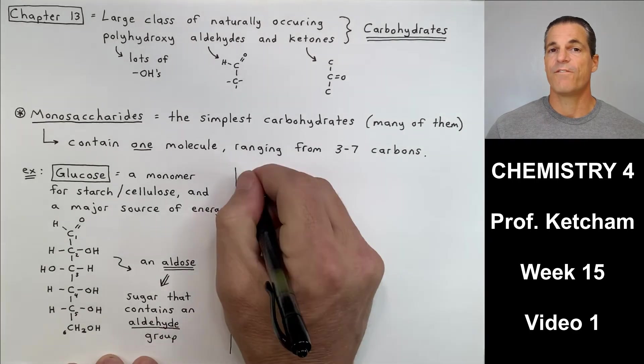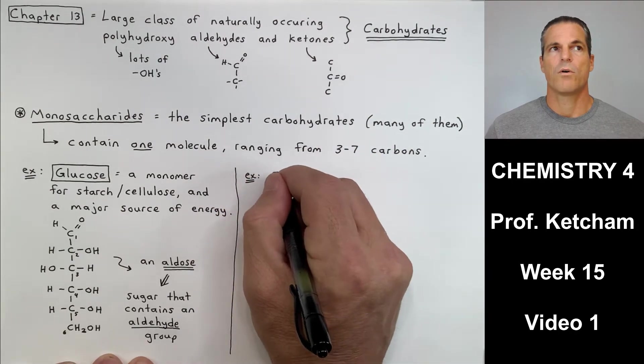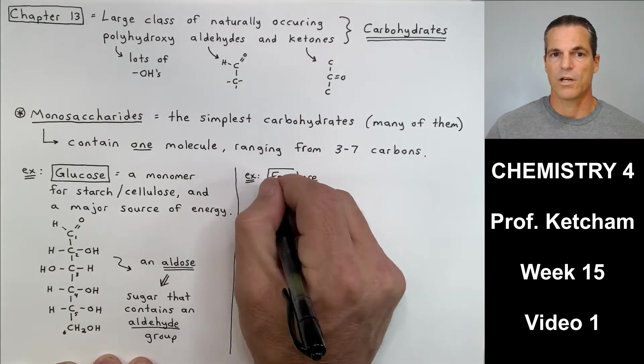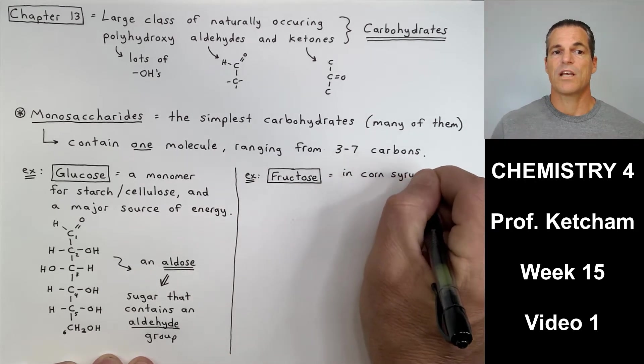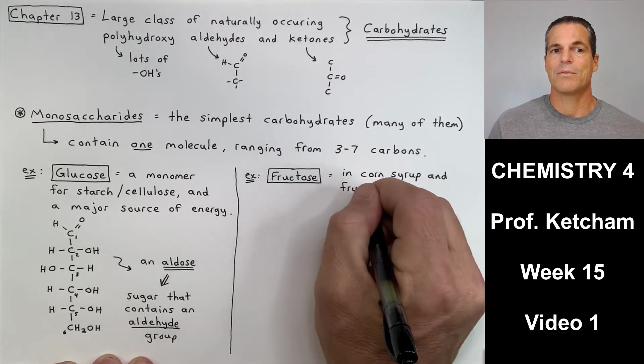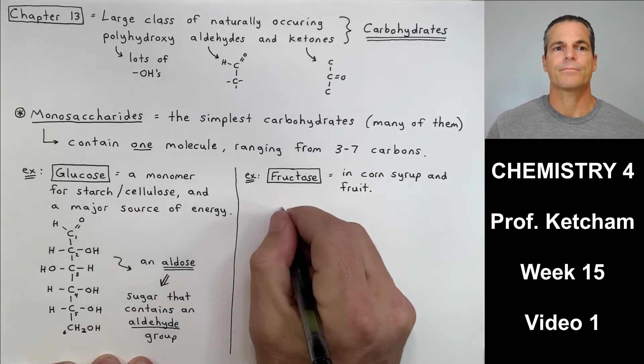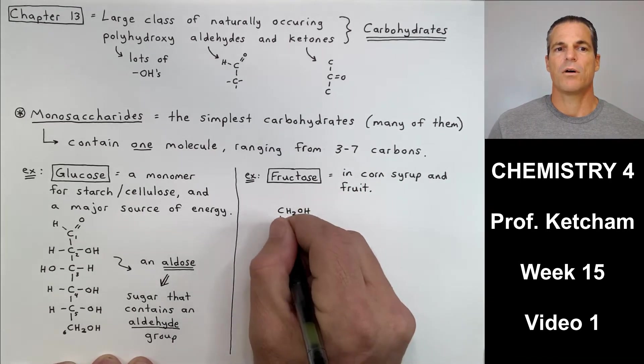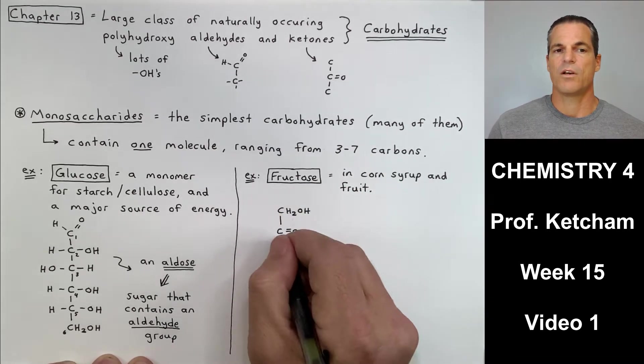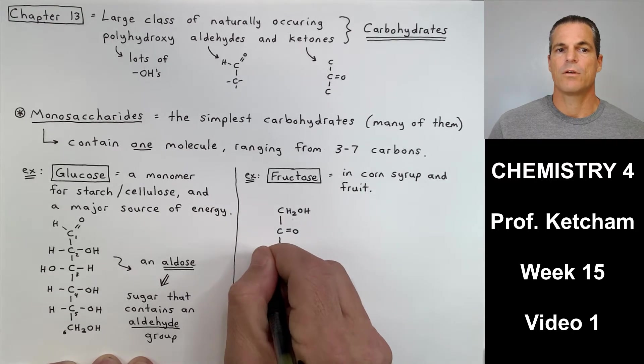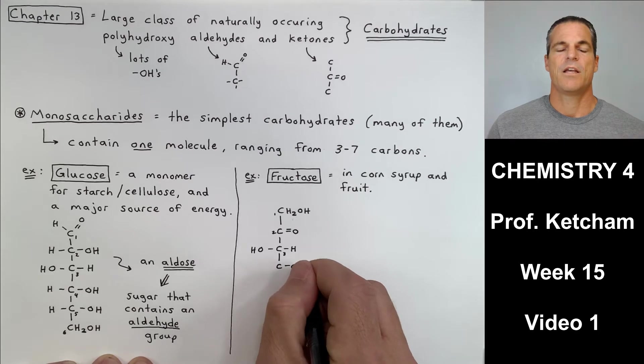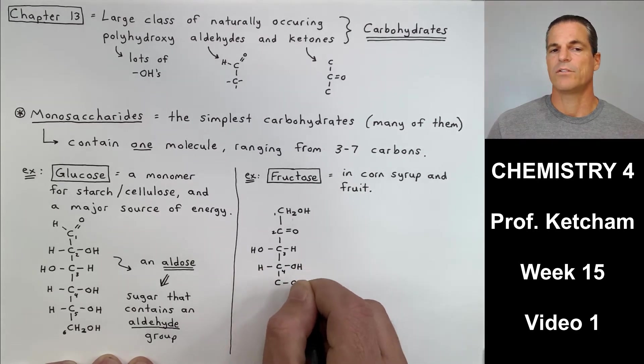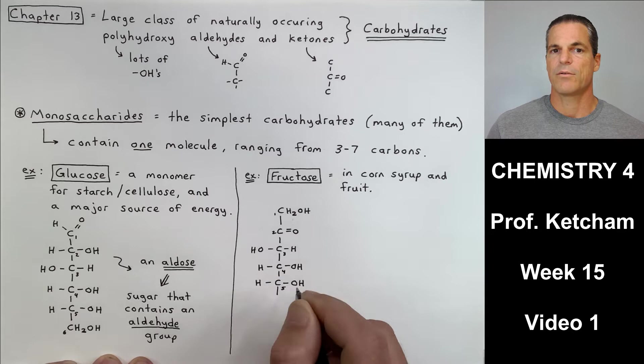Now I've drawn what's known as a Fischer projection or a Fischer diagram of glucose. It's a monomer for starch and cellulose, like I said. Notice I've drawn carbon one at the top. That's an aldehyde. And the way the carbons go are right, left, right. I'm sorry, it's an aldehyde group.